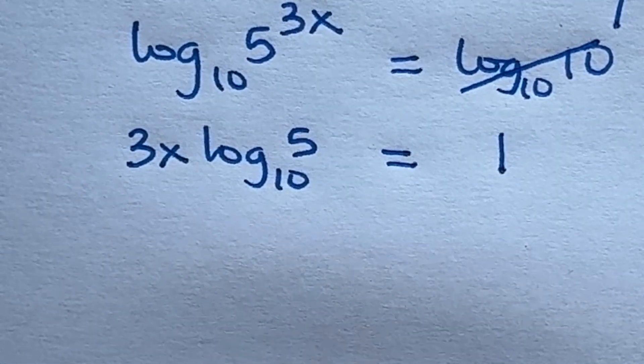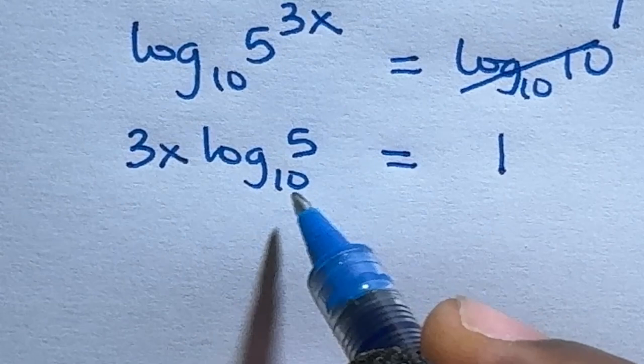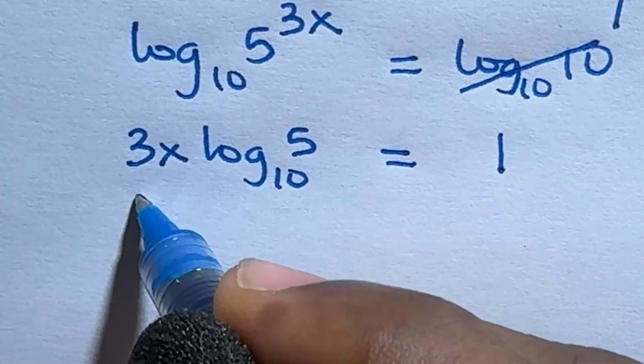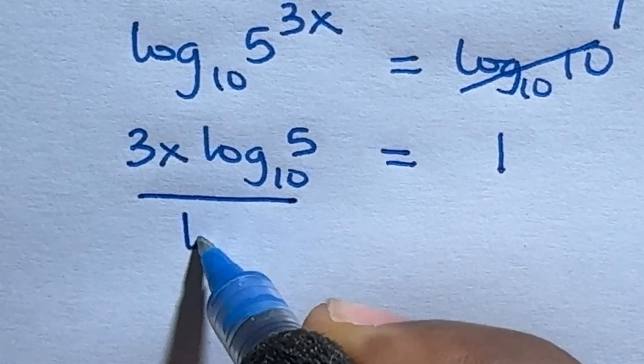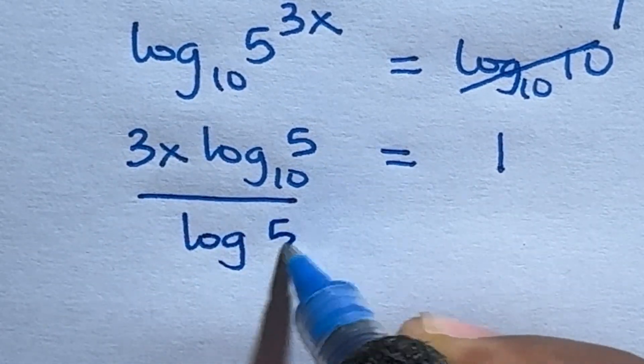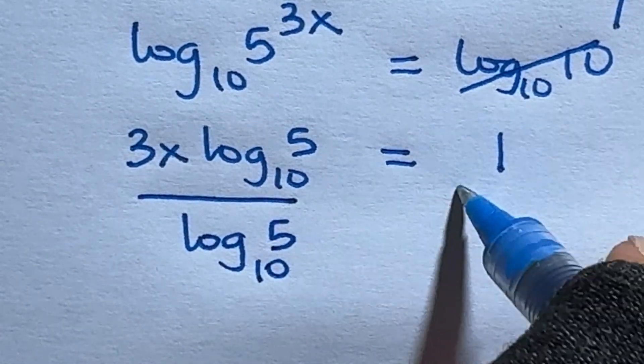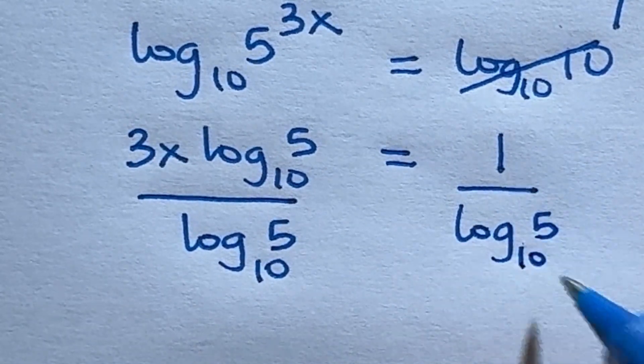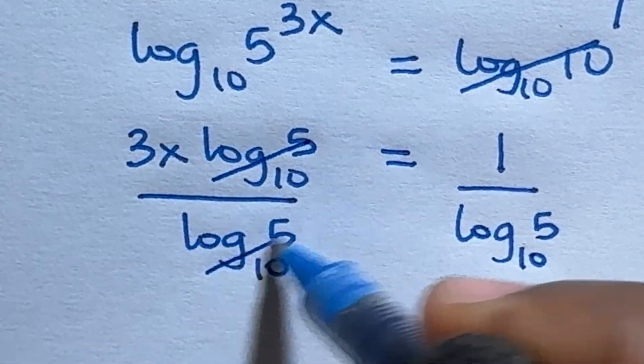Then we can divide both sides by log 5 base 10. This will get rid of this and this.